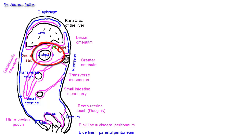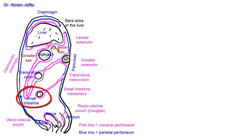Viscera that are almost completely covered by peritoneum and usually have a double fold suspending them are called intraperitoneal. So 'intraperitoneal' does not mean located inside the peritoneal cavity, but almost completely covered by peritoneum. The transverse colon and the small intestine are almost completely covered by peritoneum and have mesentery, so they are intraperitoneal.